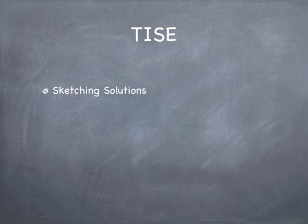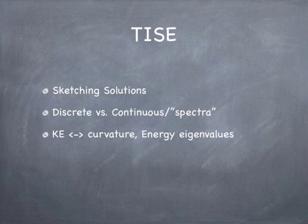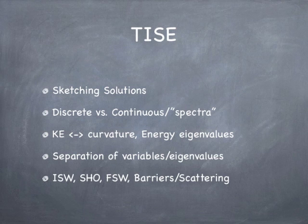What about the time-independent Schrodinger equation? You need to be able to sketch solutions with various potentials, understand the difference between discrete and continuous spectra, the way kinetic energy leads to curvature, and when the potential is greater than the energy you get real exponential solutions. You also need the concept of energy eigenvalues, the whole notion of separation of variables, and how eigenvalues come about in three dimensions. And of course, all those one-dimensional systems we studied: the infinite square well, the simple harmonic oscillator, the finite square well, barriers, scattering, and so on.